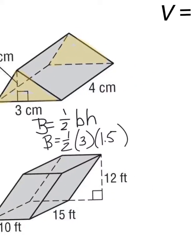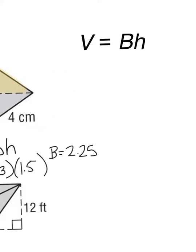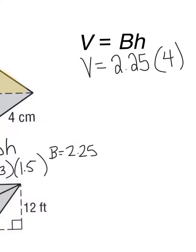Multiplying those, the area of the base comes out to 2.25. Now to find volume, I take the area of the base and multiply it by the height of the prism. Volume equals area of the base times the height of the prism, so the volume equals 9 centimeters cubed.